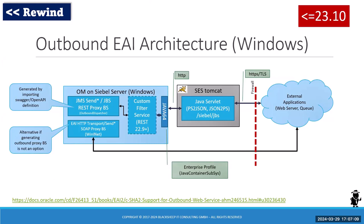This came up on Oracle Support with a customer of mine, where Oracle said it's now mandatory for Windows servers to use Tomcat for outbound EAI. The diagram focuses on the outbound architecture for EAI on Windows. If you are on release 23.10 or earlier, anything involving JMS, Java Business Services, or a proxy outbound dispatcher for REST — where requests go from the Siebel server on Windows to the server indicated by the Java 64 named subsystem — that usually points to the Siebel/JBS servlet on the SCS Tomcat adjacent to the Siebel server.